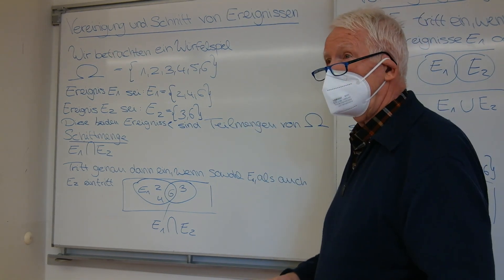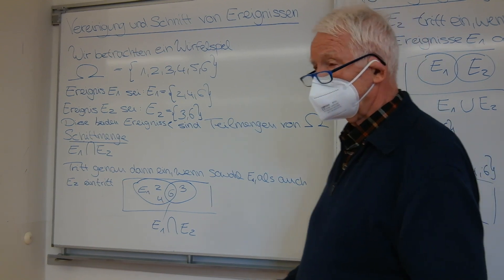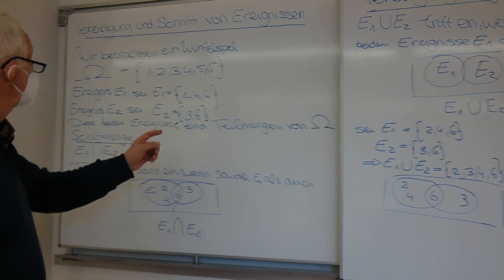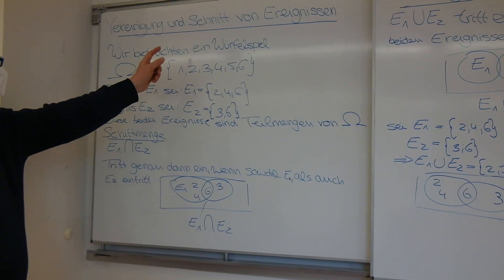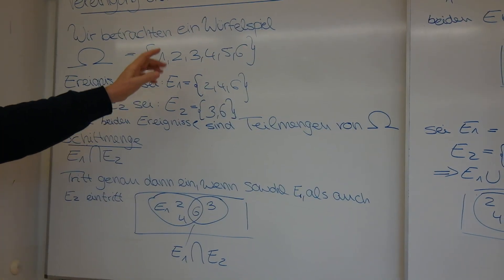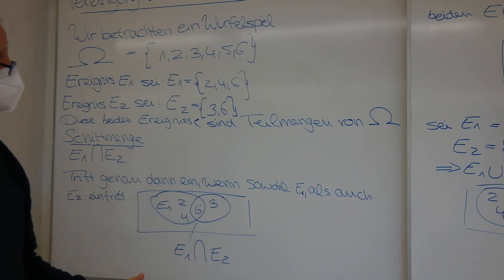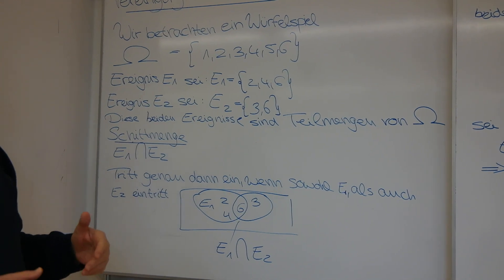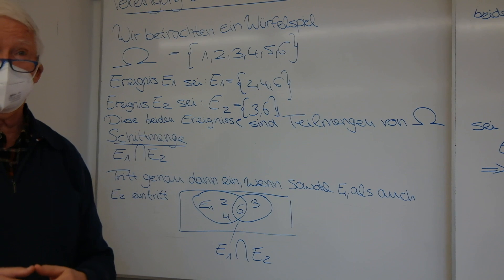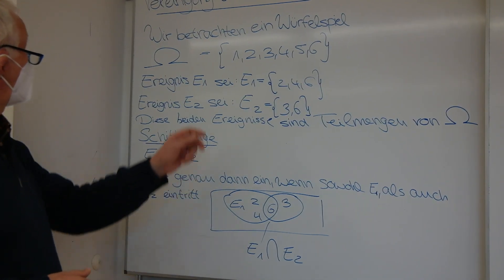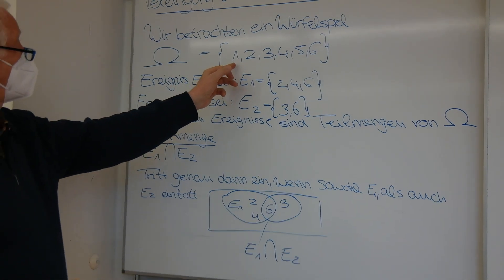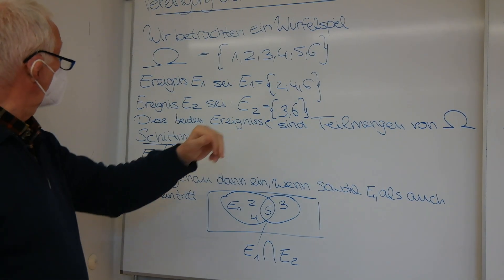Es geht also um die Vereinigung und den Schnitt von Ereignissen. Wir betrachten zum Beispiel ein Würfelspiel. Es ist möglich, mit einem Würfel die sechs Ziffern zu würfeln. Dann ergibt sich als Ereignisraum Omega gleich {1, 2, 3, 4, 5, 6}.